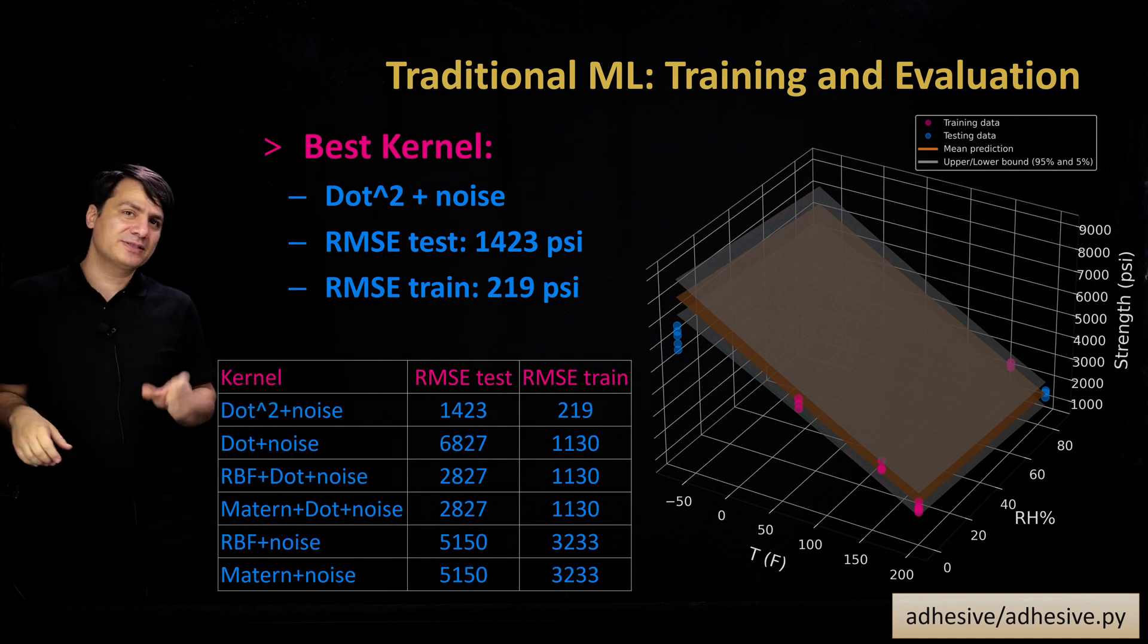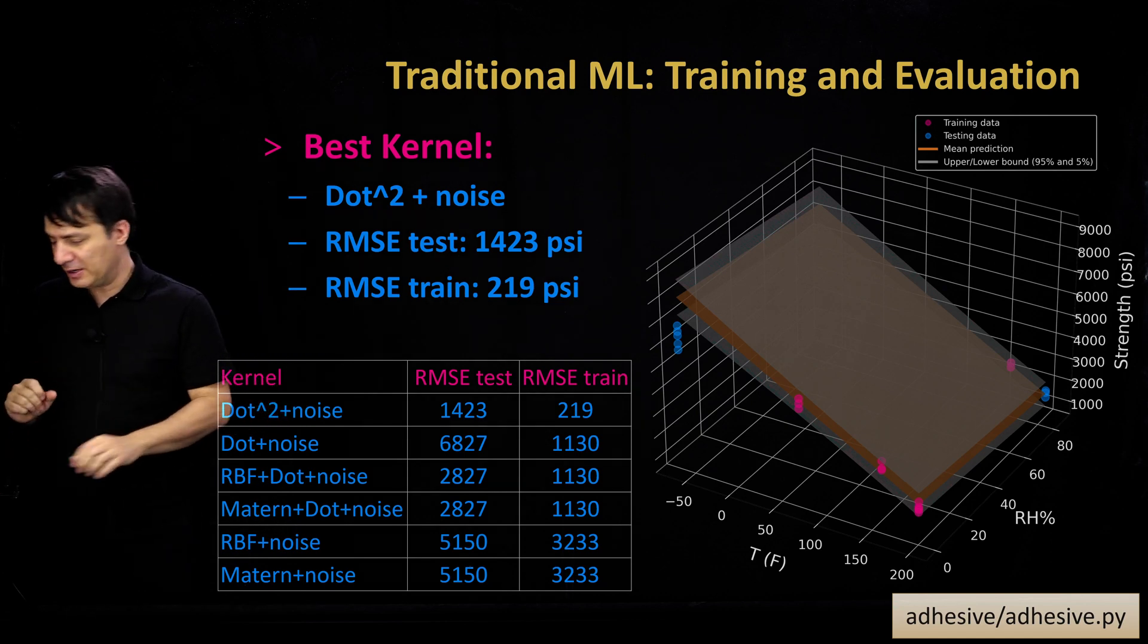It's an error in a bad direction because we are overestimating the strengths of adhesive, which means that this exercise is quite dangerous because you are creating a machine learning model which is overconfident in what the material can do when, in fact, it's not that strong. So, this was the first approach, which is a traditional approach without involving any physics.